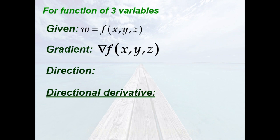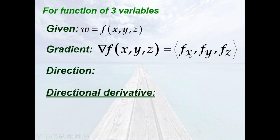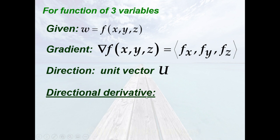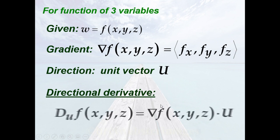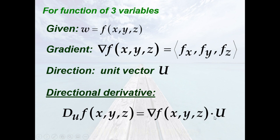What if we have a function of three variables? We use the same method. We need the gradient, which is composed of the partial derivatives with respect to x, y, and z. We also need the unit vector u. The formula for finding the directional derivative is the same — it is just the dot product of the gradient and the unit vector.